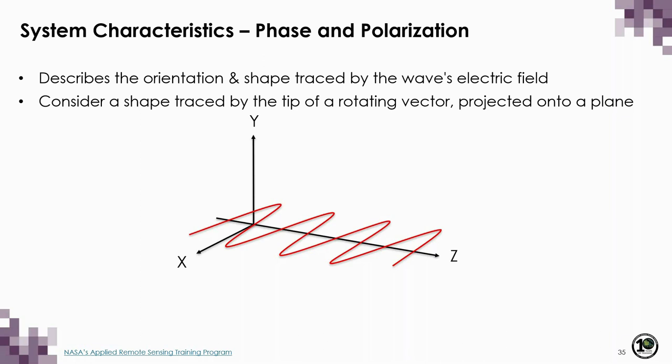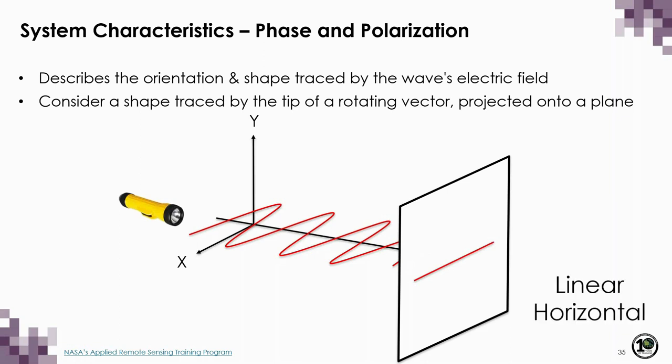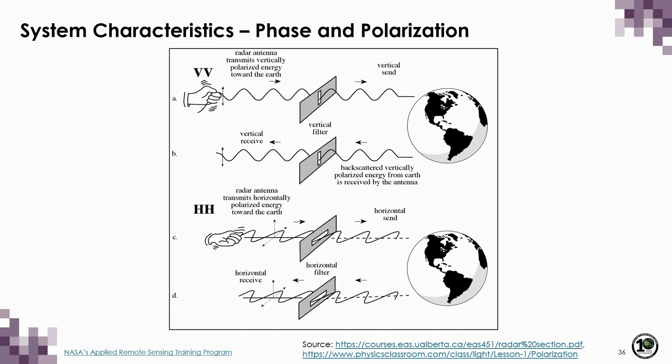If the electric field vector oscillates in the horizontal direction parallel to the x-axis, the shape projected onto a flat surface would be a horizontal line — this is called linear horizontal polarization. Linear vertical and linear horizontal are the two most important polarizations because most radars transmit and receive these two. The term 'linear' refers to the fact that a straight line is traced by the tip of the electric field vector, and 'horizontal' and 'vertical' refer to oscillations along the x and y axes respectively.